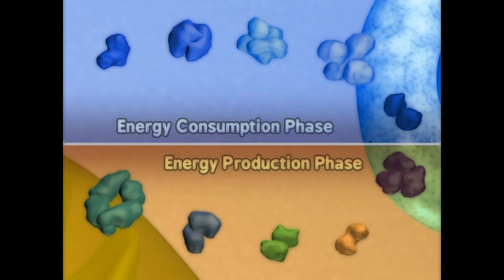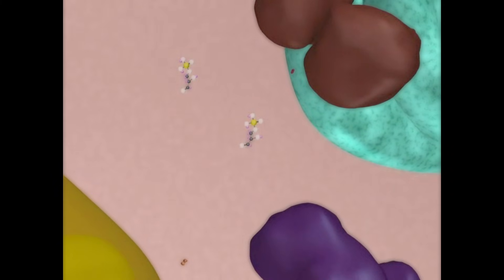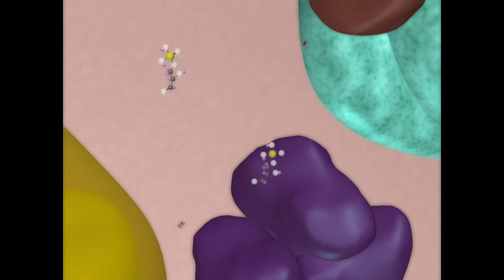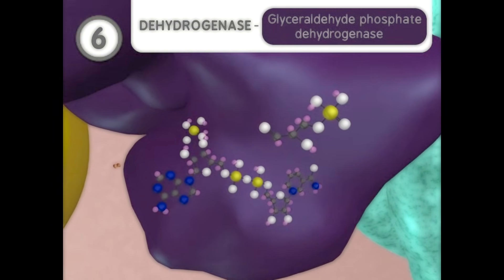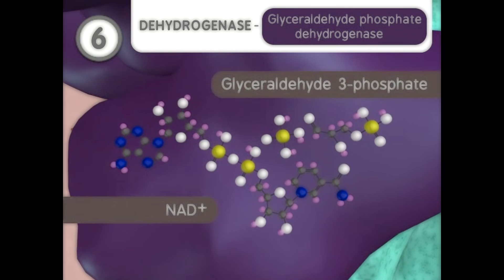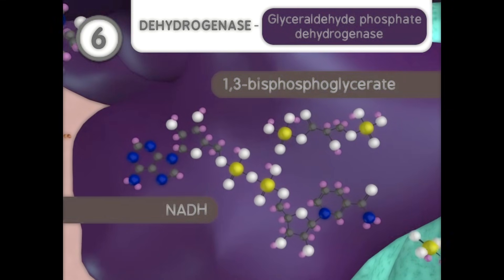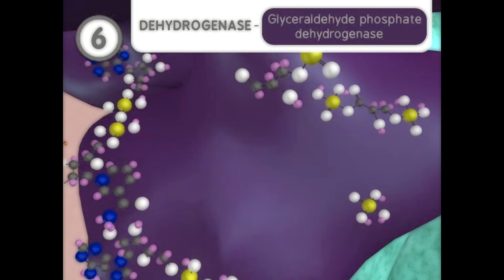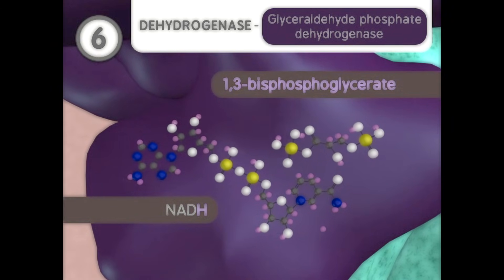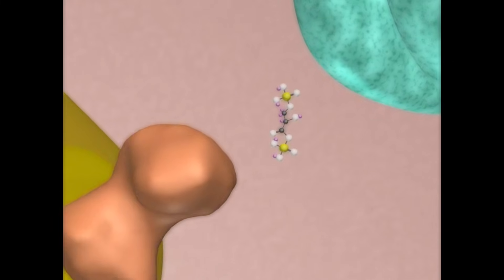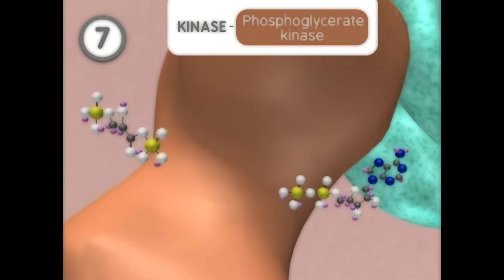The next five steps of glycolysis are the energy producing phase. In step 6, both glyceraldehyde-3-phosphates are oxidized to 1,3-bisphosphoglycerate by a dehydrogenase. This step produces one NADH for each oxidized glyceraldehyde-3-phosphate, for a total of two NADHs. These NADHs are later used to produce more ATP for the cell.